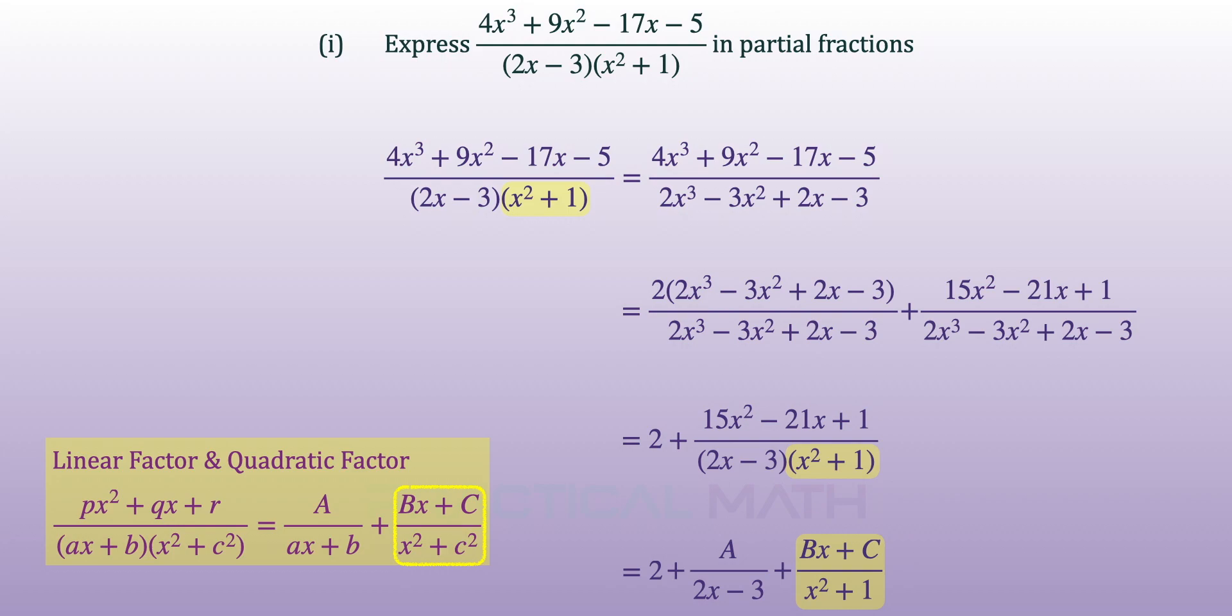If the denominator has a quadratic factor of x squared plus c squared, in this case x squared plus 1, where it cannot be factorized, we will have the numerator to be Bx plus C.